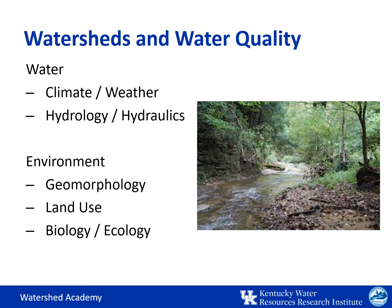Water quality is affected by two basic factors: the water itself and its environmental or physical setting. The water itself can be influenced by the climate and weather, the hydrology, and the hydraulics — or how the water flows from one point to another. The environment or physical setting describes the area that the water flows over, under, and through. It's affected by the geomorphology of the area, the land use of the area, and the vegetation and organisms that are in a watershed and the water bodies themselves.